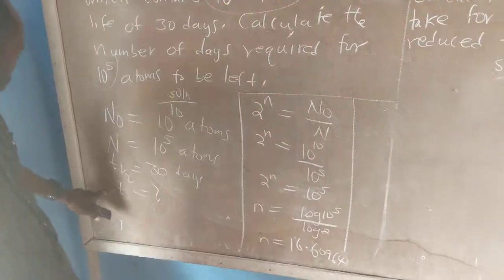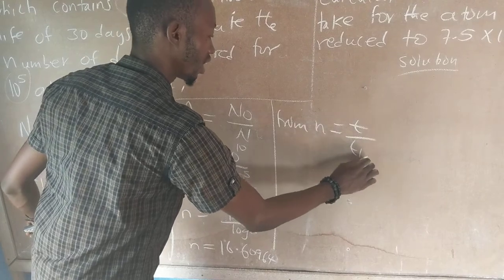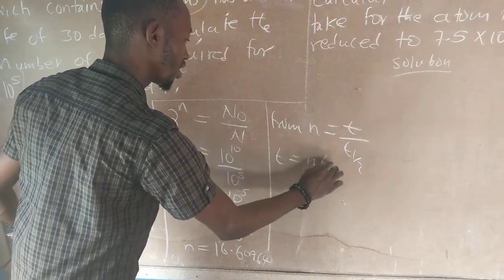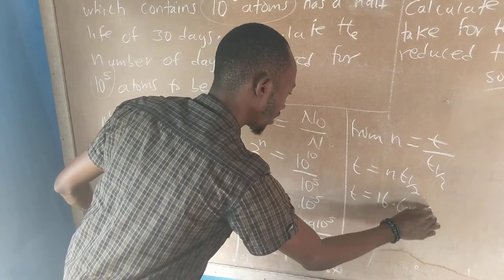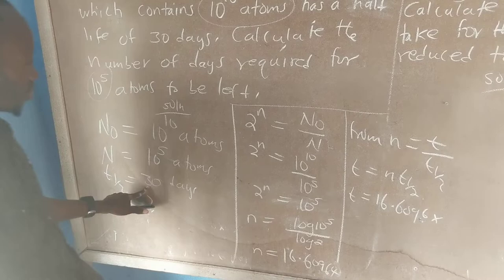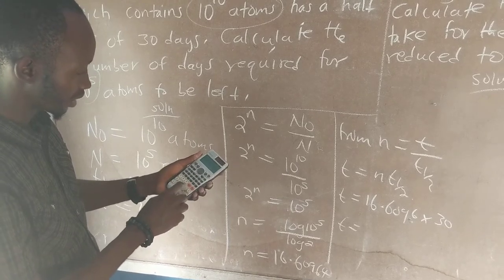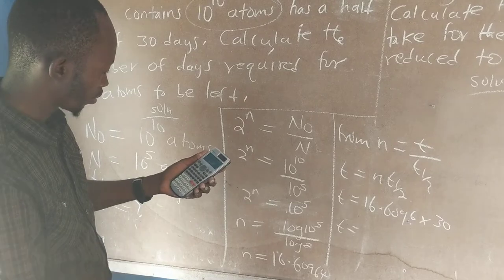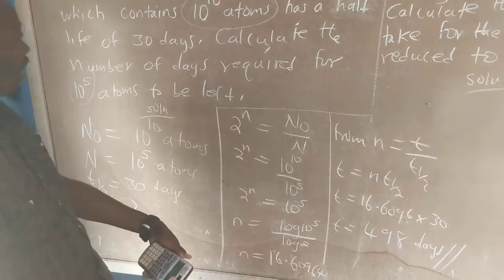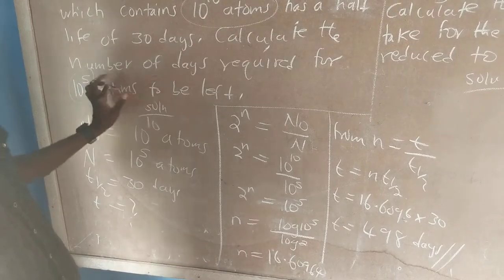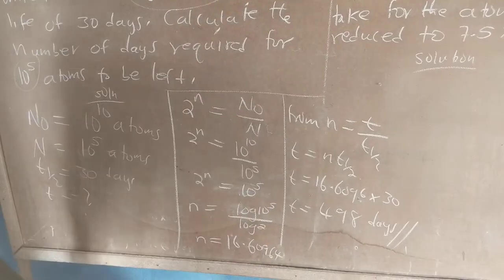We are not required to find n — we need to find t. Recalling n equals t over T½, we rearrange to get t equals n times T½. So t equals 16.6096 times 30 days, which gives 498 days. The number of days required for the atoms to be left is 498 days.